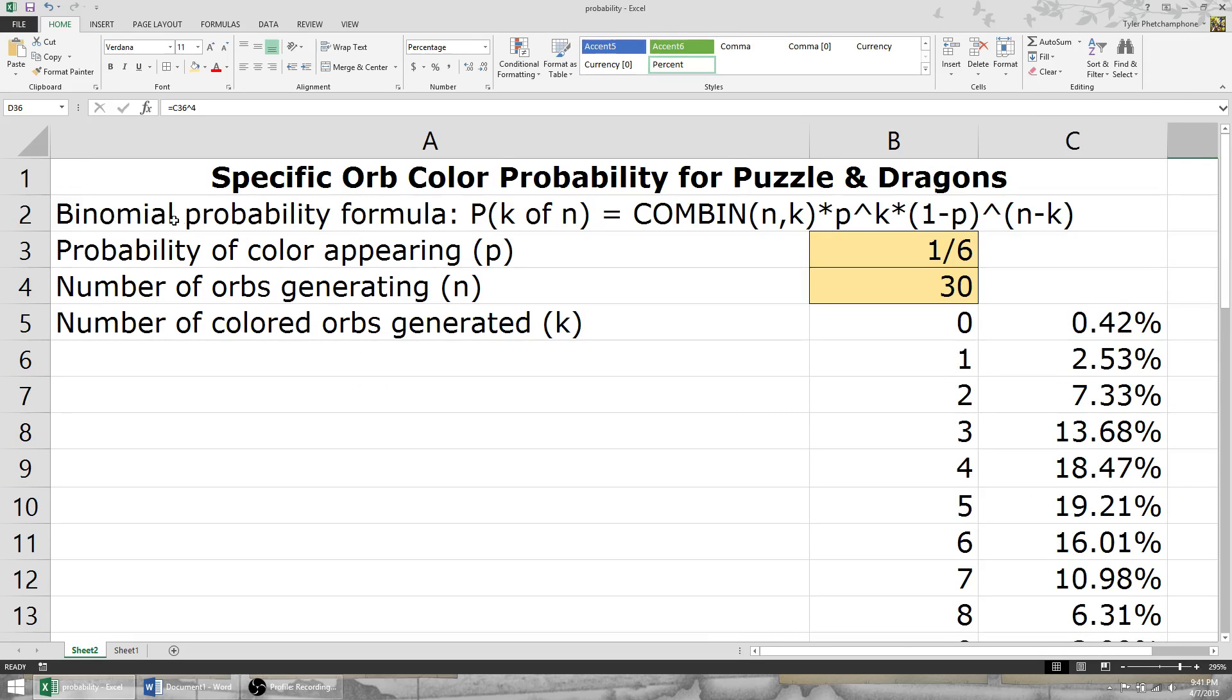Not only does binomial probability formula work for leader skills, but it also works for active skills. Let's say you're playing with your favorite card in the world. It's the most common one, Sonya.